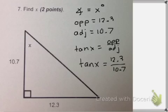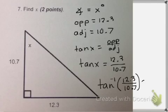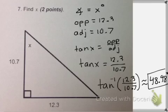When you're trying to find the angle, what you do is you say the inverse tangent, and then you type in 12.3 over 10.7, and this will tell you what your angle is. So you say inverse tangent, 12.3 divided by 10.7, close your parentheses, and you get about 48.98 degrees. Make sure you have the degrees sign because it is an angle. That is all for the group quiz. Make sure you have a follow-up list. Thank you.